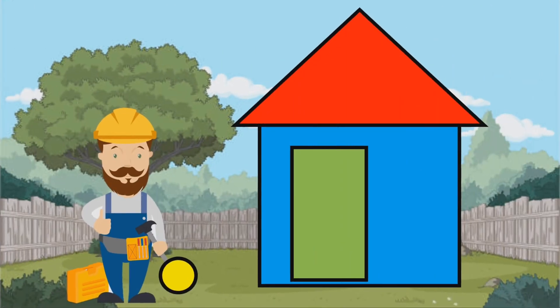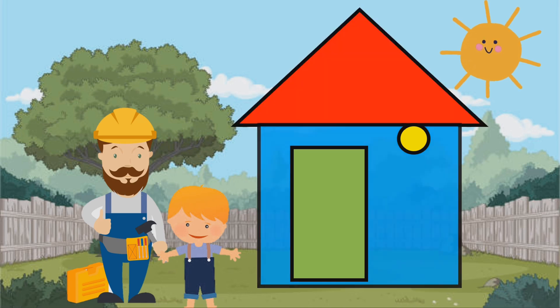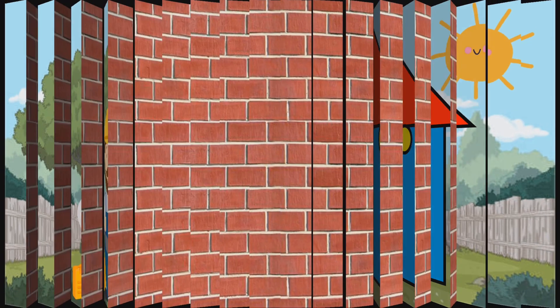Mr. Basic and Teddy's new house is now finished. The roof is shaped like a triangle. The wall is shaped like a square. The door is shaped like a rectangle. The light bulb is shaped like a circle. They are tired, but they are very happy that they have a new house.